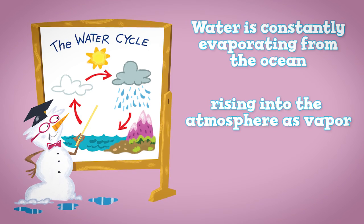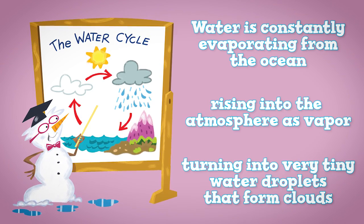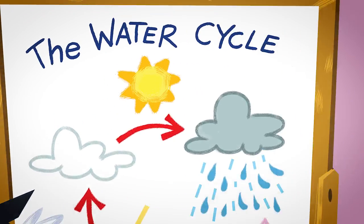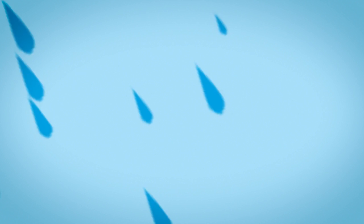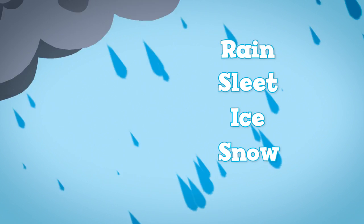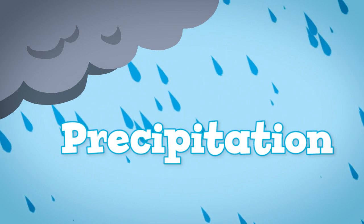rising into the atmosphere as vapor, and turning into very tiny water droplets that form clouds. This is part of the water cycle. Any kind of water that falls from the sky – rain, sleet, ice, or snow – is called precipitation.